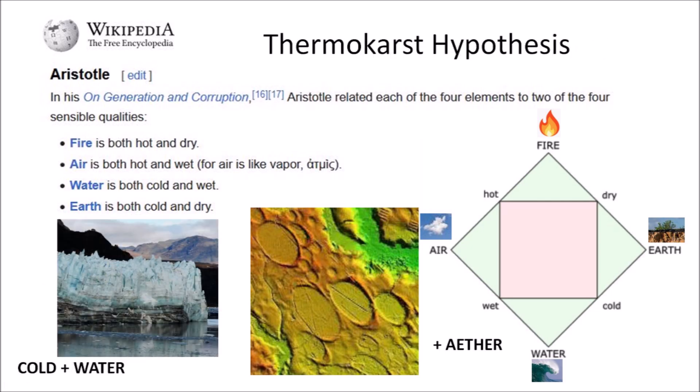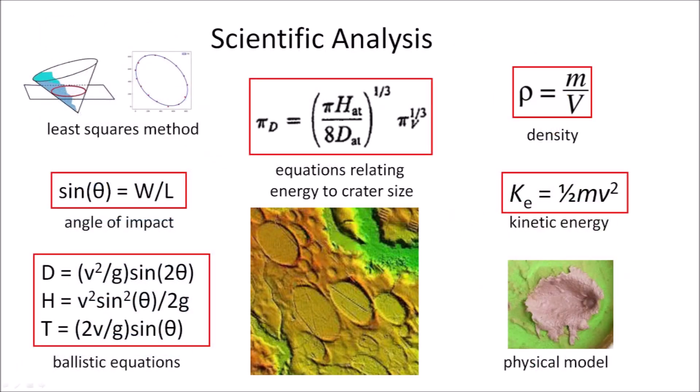The Thermokarst hypothesis proposes that the Carolina Bays are relic thermokarst lakes. These lakes form on ground that has permafrost, and when the underground ice melts, a sinkhole forms that fills with water. This hypothesis has several serious deficiencies: one, sinkholes don't have raised rims; two, they are not mathematically elliptical; and three, the bays in North Carolina, South Carolina, and Georgia are found on terrain that had no permafrost even during the last glacial maximum. We cannot just wave our hand and ignore the permafrost evidence.